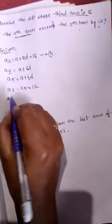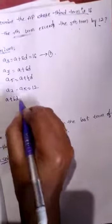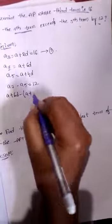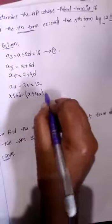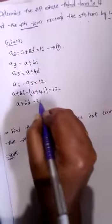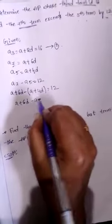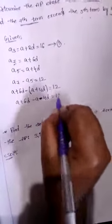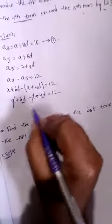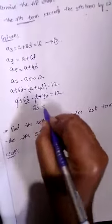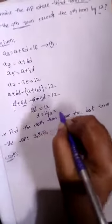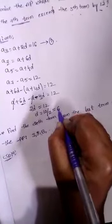Substituting: (A plus 6D) minus (A plus 4D) equals 12. A plus 6D minus A minus 4D equals 12. A and A get cancelled. 6D minus 4D equals 2D. So 2D equals 12, therefore D equals 12 divided by 2, which equals 6.